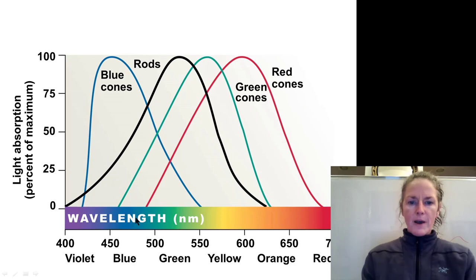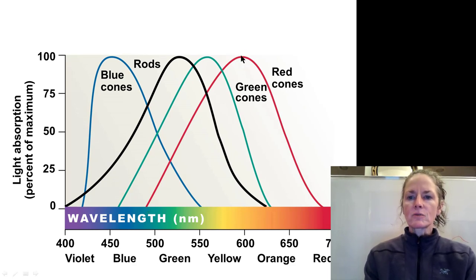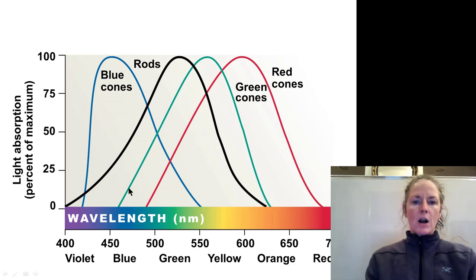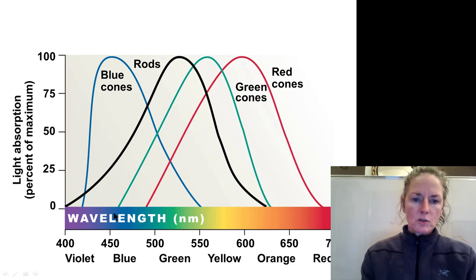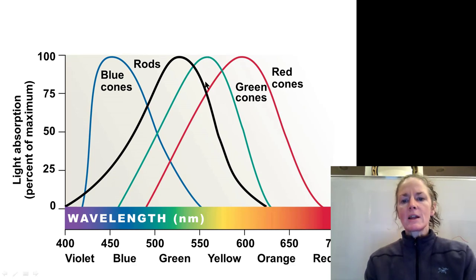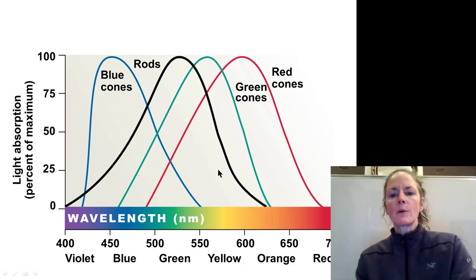The green cones are sensitive from the orange range to somewhere in the middle of the blue range, with their peak right at the border of the yellow and green wavelengths — around 560 nanometers.